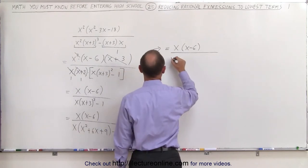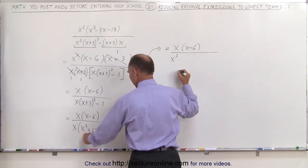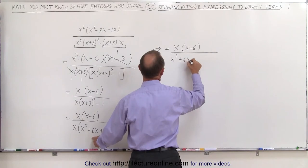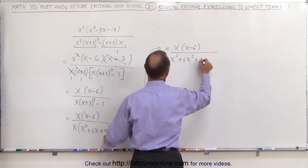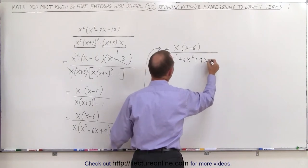I end up with an x cubed plus 6x squared plus 9x minus 1.